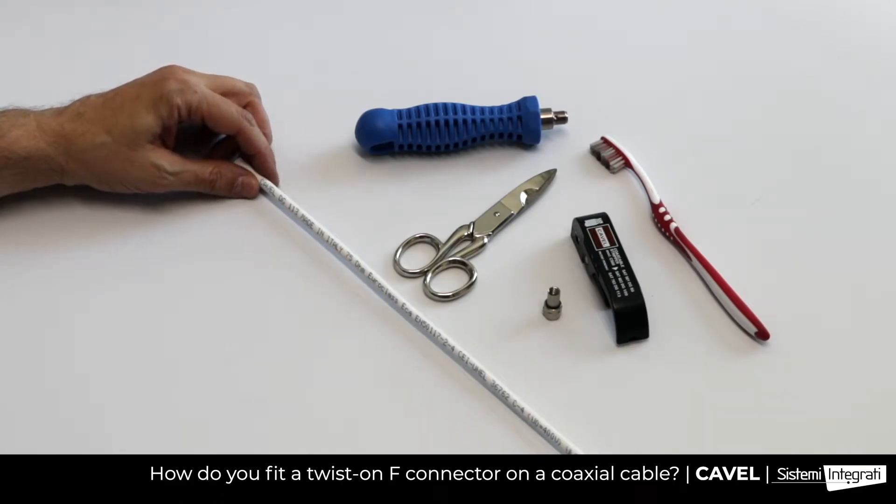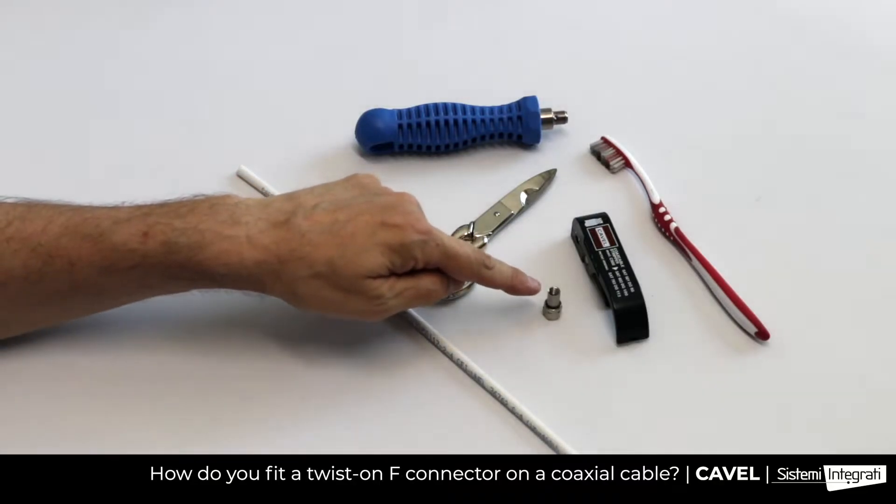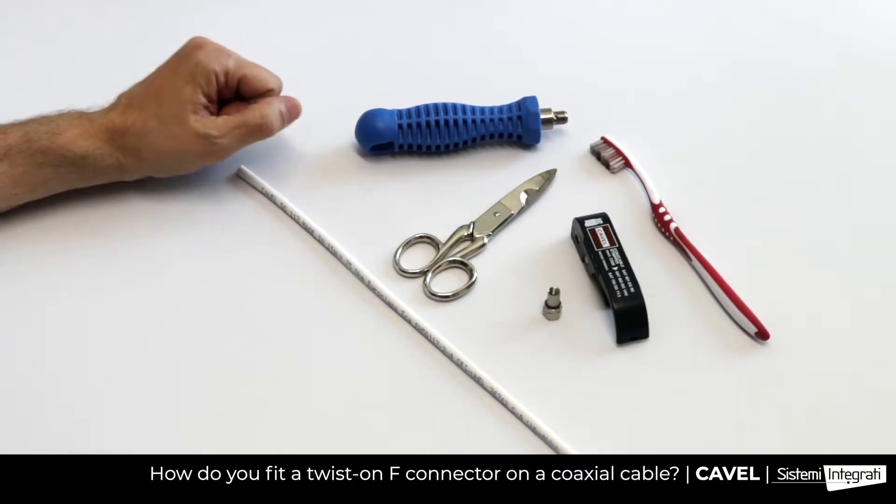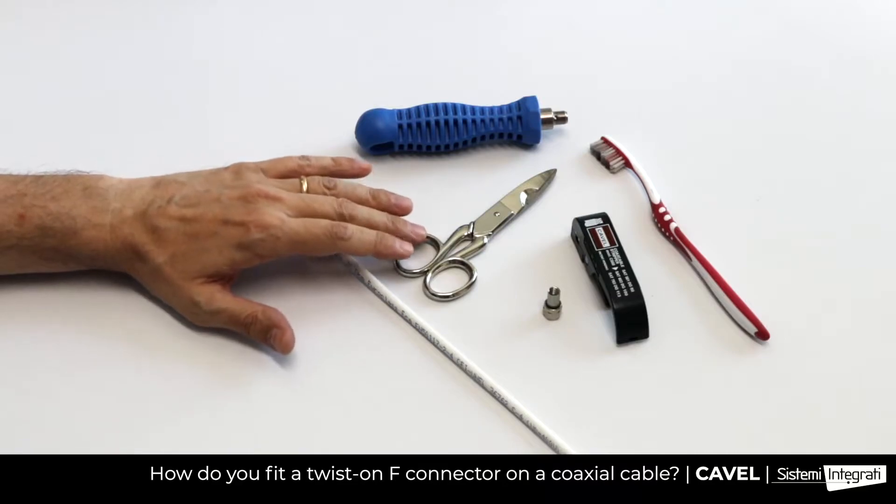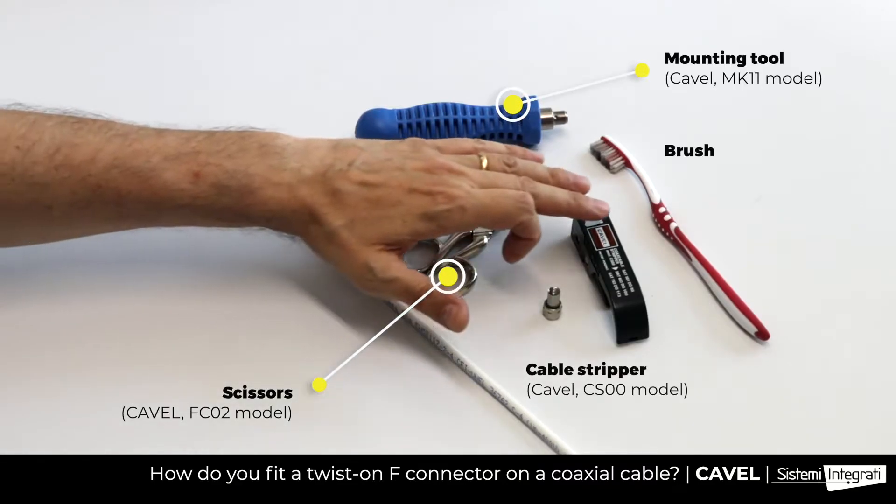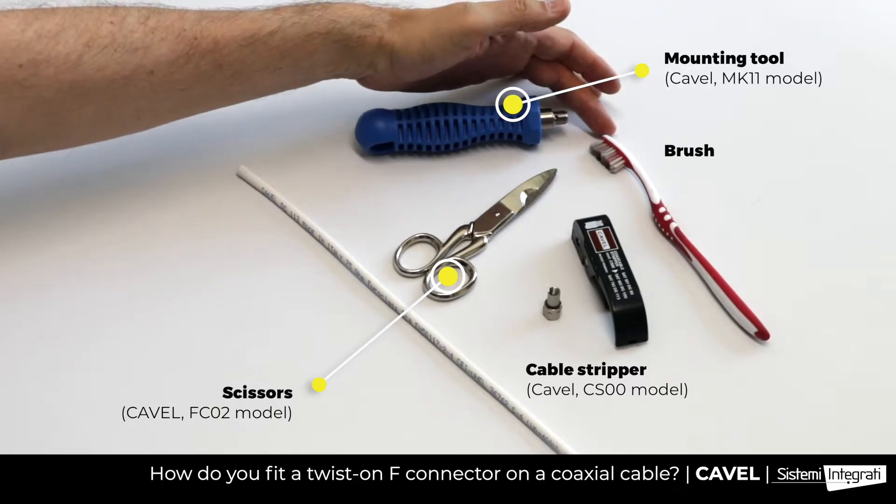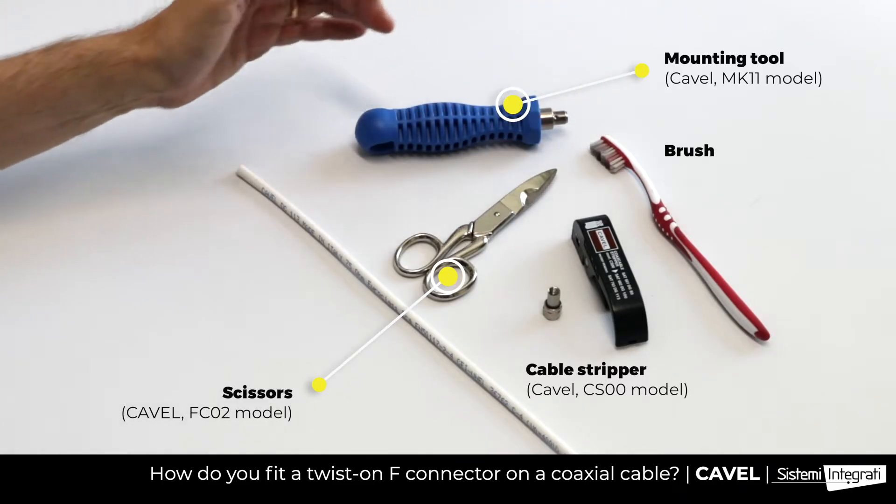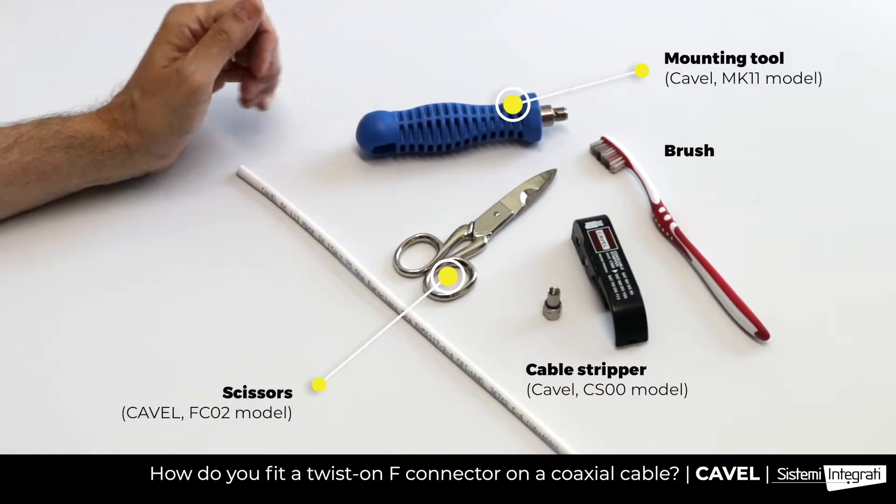What you need to fit an FA703 twist-on connector on our 6.60mm diameter DG113 cable: Cavel scissors, a CS00 cable stripper, a brush to fold the braid over the sheath, and a mounting tool.